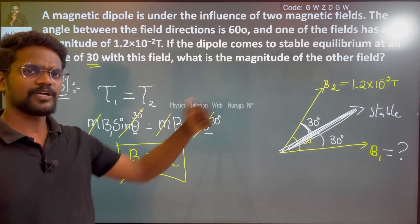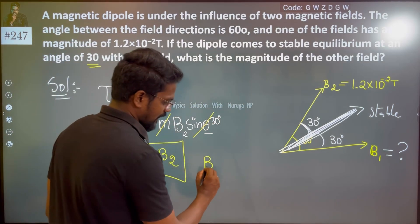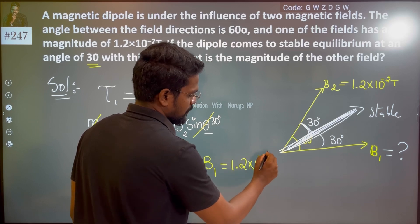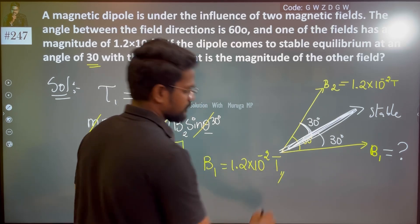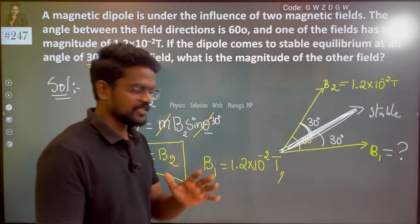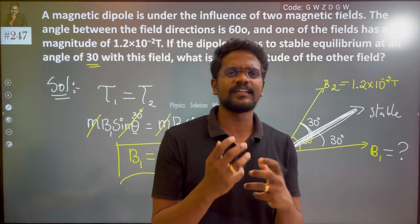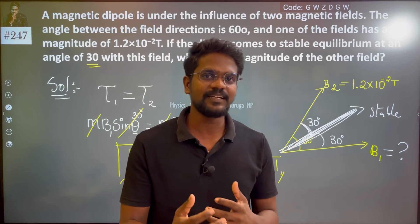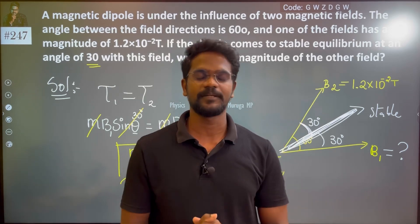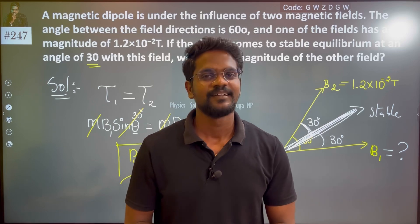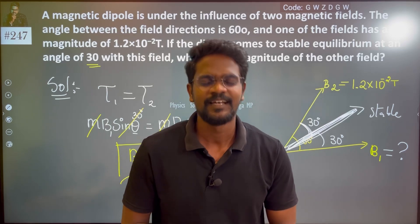So B1 value is 1.2×10^-2 Tesla, therefore B2 is also 1.2×10^-2 Tesla. That's the answer. Thank you.